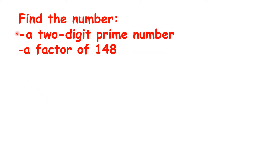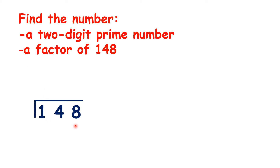Now we need a two-digit prime number which is a factor of one hundred and forty-eight. Remember, a prime number can only be divided by itself and one to get a whole number. There are different ways of solving this, but here's the quickest: divide one hundred and forty-eight by single-digit numbers, and then see if the quotient is a two-digit prime number. So one hundred and forty-eight divided by three is thirty-nine remainder one, so that doesn't help us.